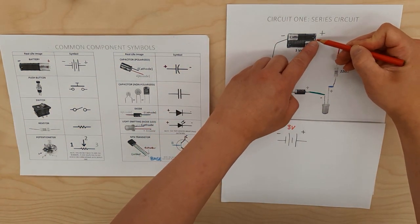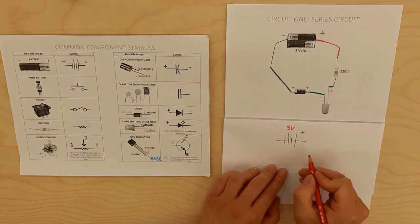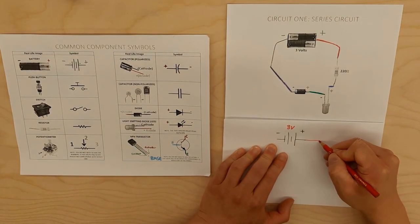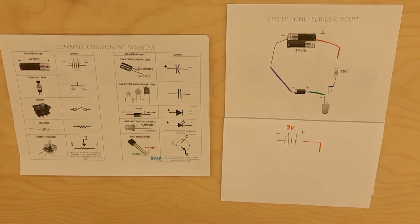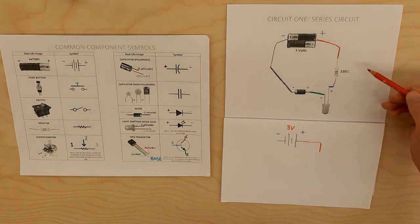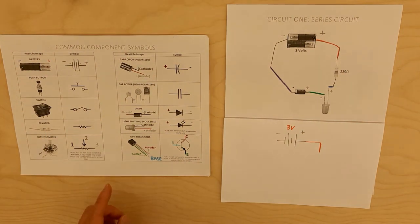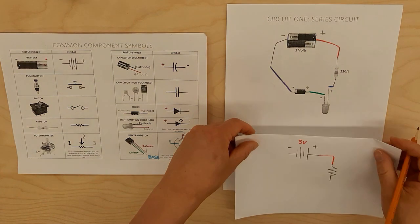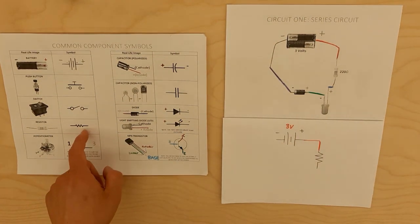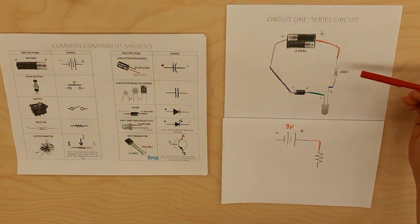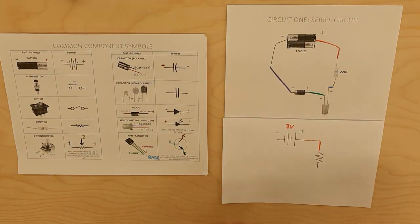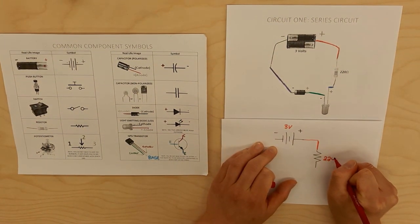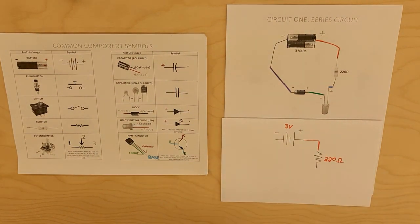Next I'm going to draw the positive red wire and put a bend in it to keep it simple. The next component is the resistor. The symbol for the resistor is the squiggly line — remember it's three squiggly lines. I want to be specific: this is a 220 ohm resistor, so I'm going to write 220 ohms. The omega symbol is short for ohms.